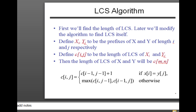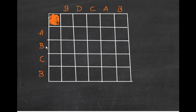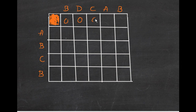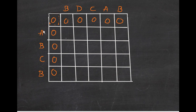These are the two strings we're going to be working with: BDCAB and ABCB. Notice that we have an extra row and an extra column for each of these strings. First, we have to fill all these cells with zero — so 0, 0, 0, 0, 0, 0, 0, 0. You have to fill that extra row and column with zeros as well.